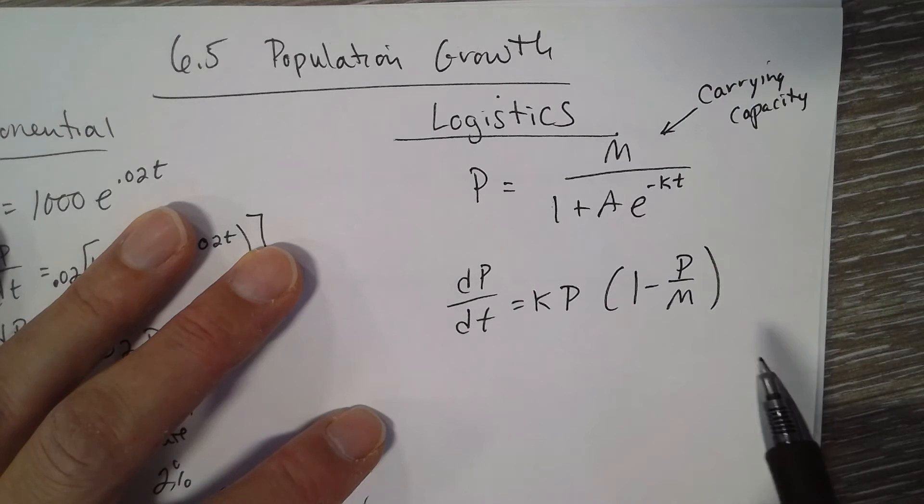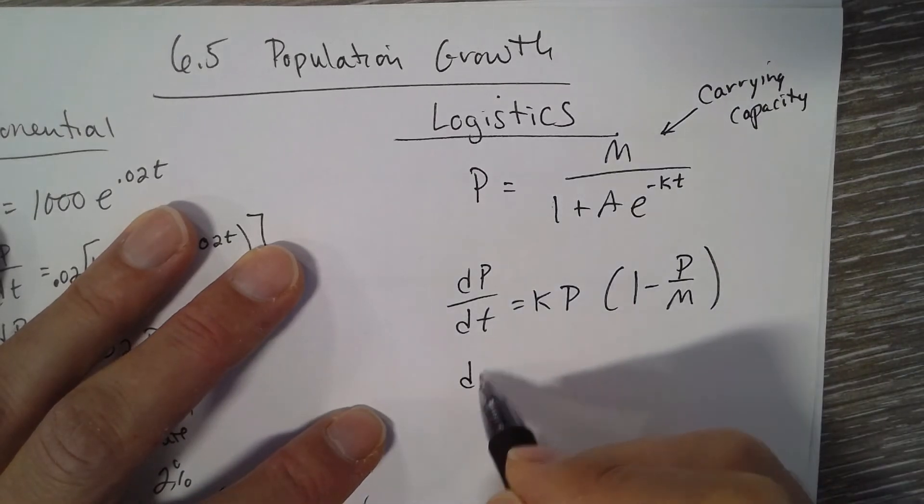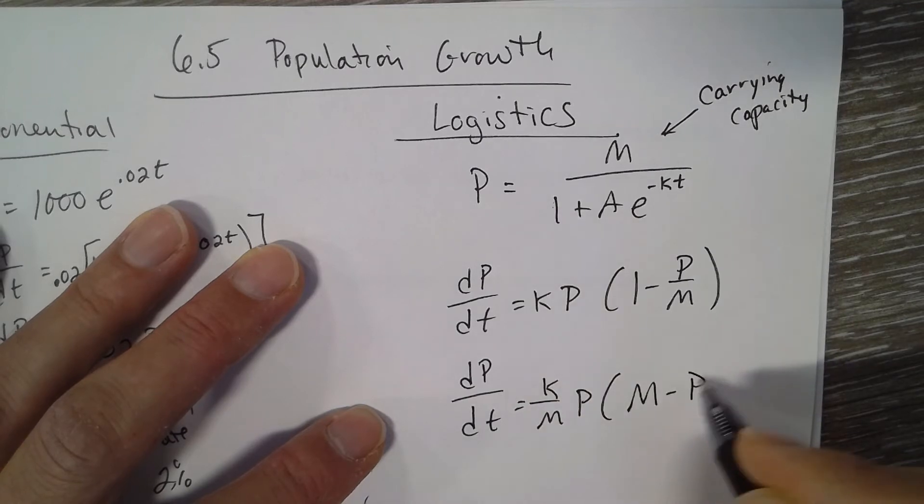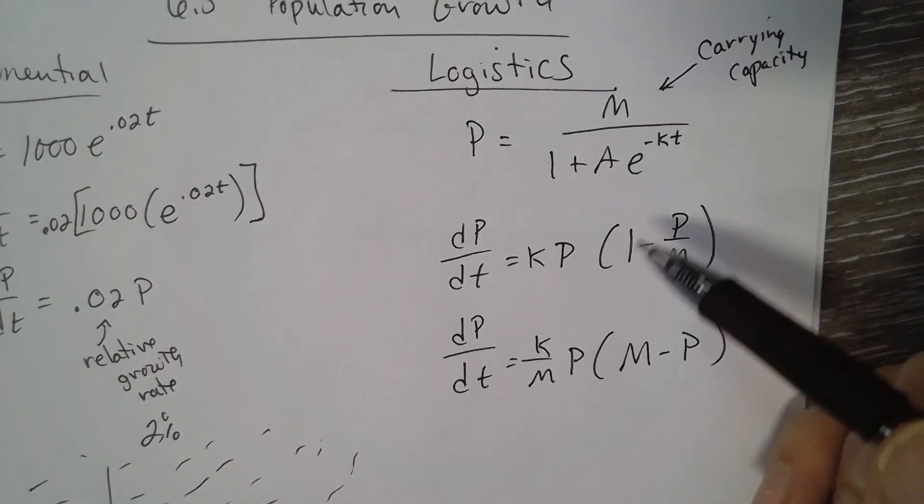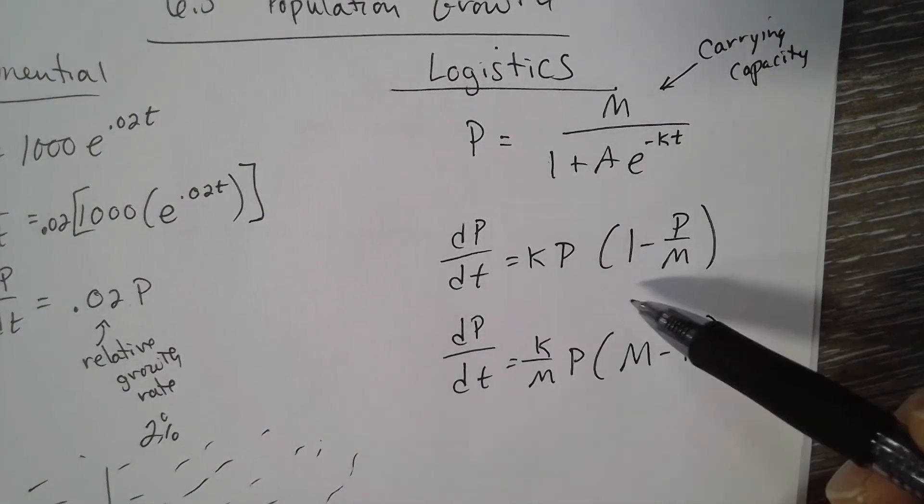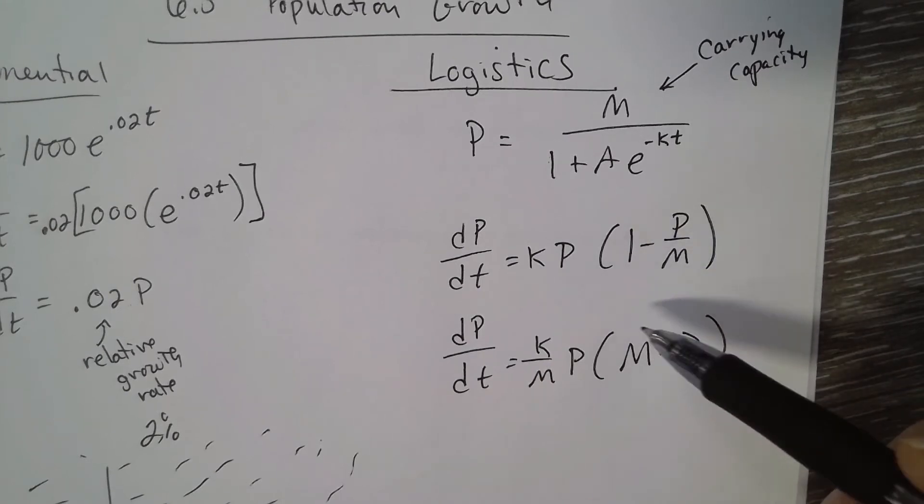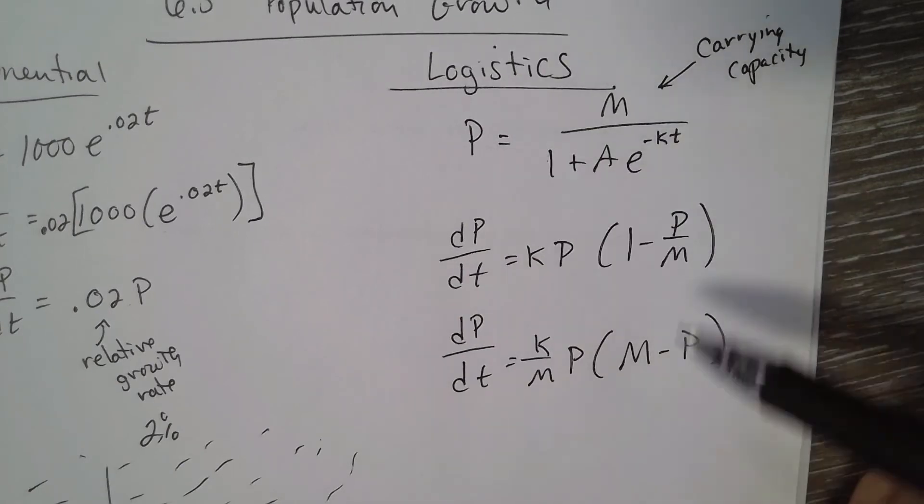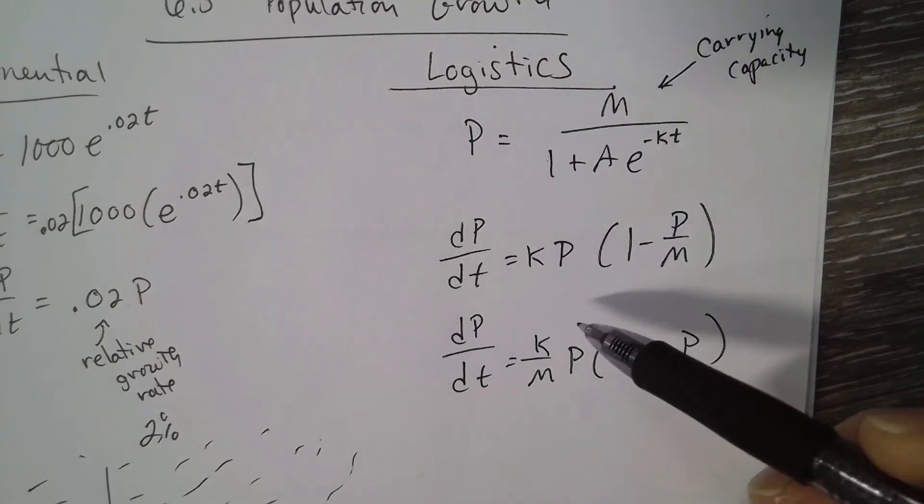And if you factored out 1/M from it, just a different version of the same thing, it would be (k/M)P(M - P). These are the same things, and we could prove that this is a differential equation by separating the variables, moving them to the other side, integrating—and through quite a long process, you would get the original equation. Same thing if you find the derivative, you end up getting there.